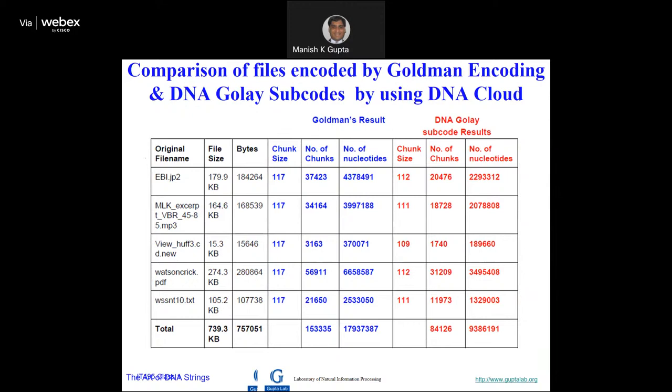You can see the improvement: the Goldman result which appeared in Nature stored five files, and our approach shows a huge improvement — the number of chunks is less with our approach.